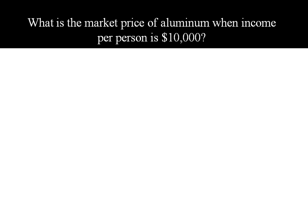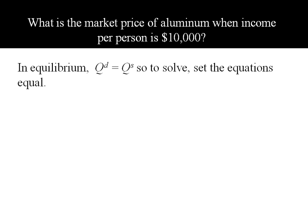What's the market price of aluminum when income per person is $10,000? In equilibrium, we know that quantity supplied and quantity demanded have to be equal, so we're going to set these equations equal.